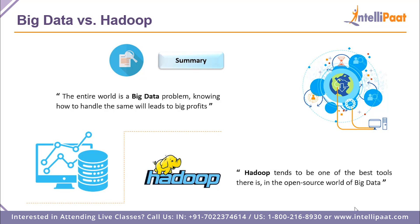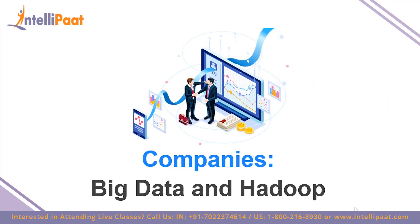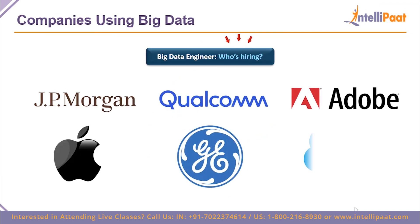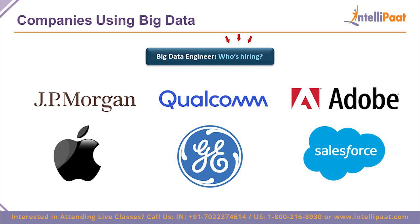The average salary of a big data engineer is around $110,000 USD per year, and the average salary of a Hadoop developer is around $135,000 per year. To summarize: the entire world is one big data problem, and knowing how to handle it will lead to big profits. Hadoop tends to be one of the best open source tools for handling huge amounts of data. Companies hiring for big data engineers include JP Morgan, Qualcomm, Adobe, Apple, General Electric, Salesforce, and thousands more.